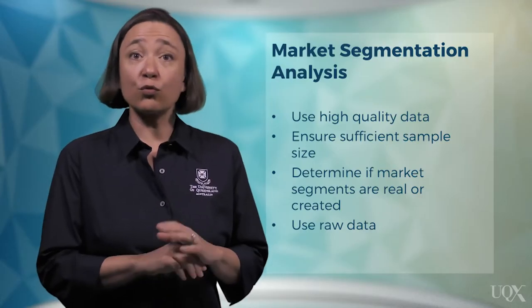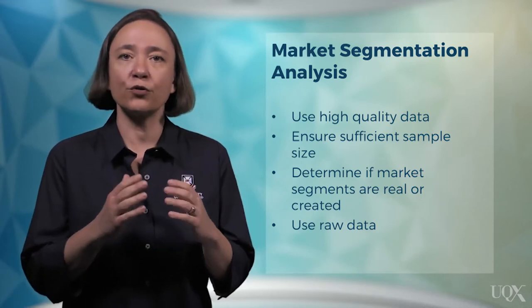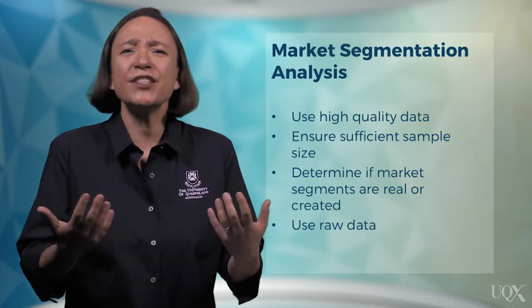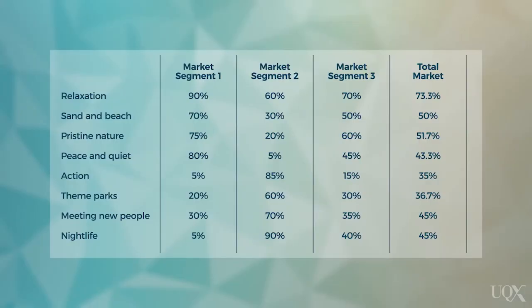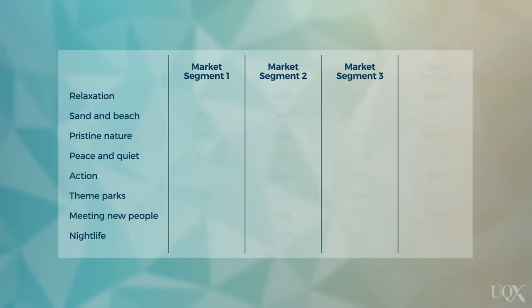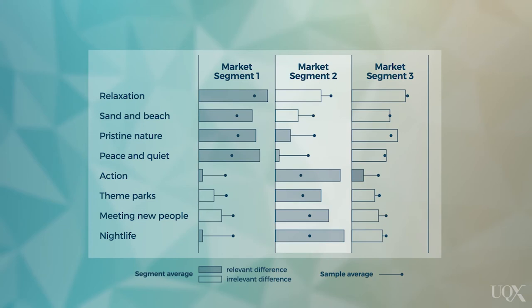You are better off using raw data than using factors, which are combinations of variables in the raw data. It is also important to present segmentation results in a way that is easy for everyone to understand. This is best done with a chart. Look at this table, for example — it is difficult to profile segments based on a table. However, if we put the same information in a smartly designed chart like this one, we can immediately see the key segment characteristics. Segment 1 is keen on relaxation, sand and beach, pristine nature and peace and quiet. Segment 2 is interested in action, theme parks, meeting new people and nightlife.